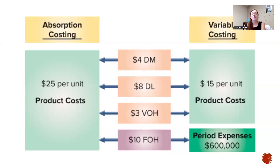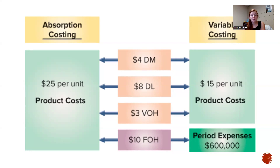Using that same diagram, under absorption costing all the components add up to $25 per unit in product cost. Under variable costing, we have $15 per unit because we left that $10 per unit in fixed factory overhead out of the product cost and expensed it all out as a period expense right when it happened.